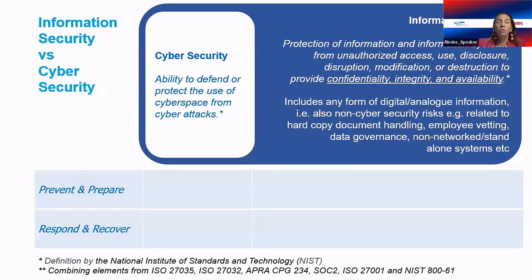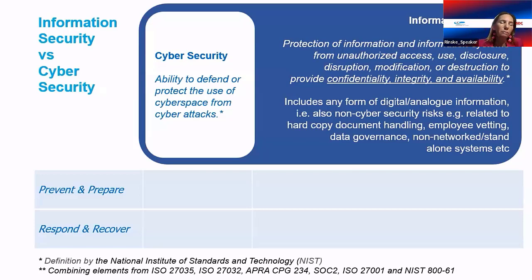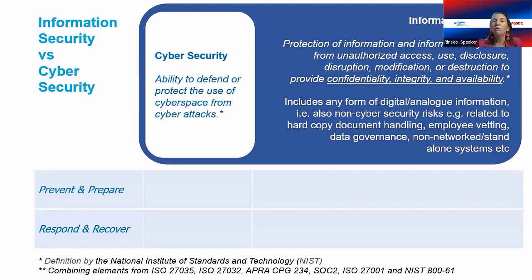When we talk about cyber security, we're typically dealing with confidentiality — where data is stolen and put into the public domain. It can also be an integrity issue if hackers manipulate your data, for example editing your corporate website to display incorrect information. Or they may steal financial data and manipulate records, creating an operational crisis that requires a business continuity plan.